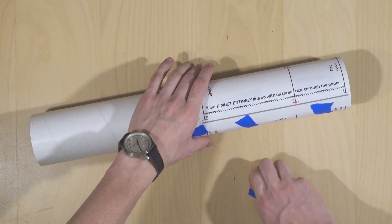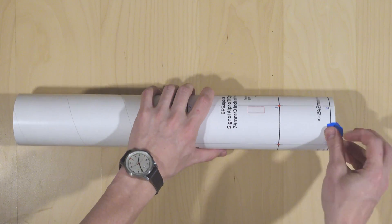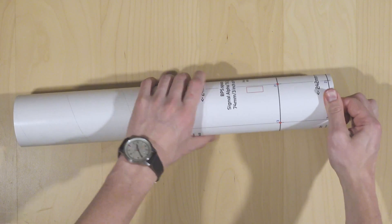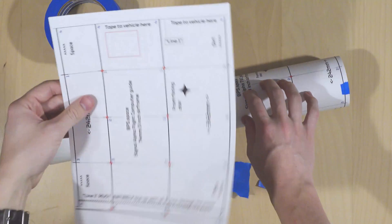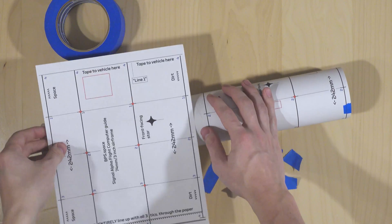Once you're satisfied with where the motor sits, you can tape the rest of this paper down. You really don't want it to move around too much, so you can be kind of generous with the tape here. After this, we'll repeat the same process with the flight computer guide.